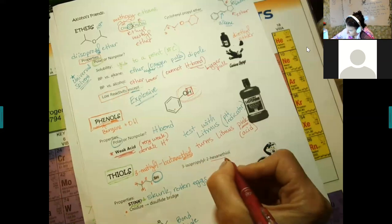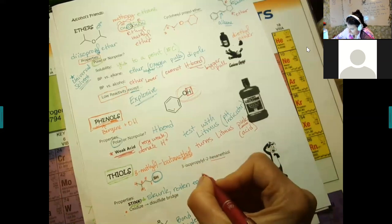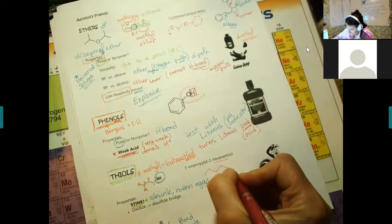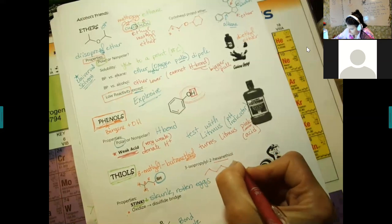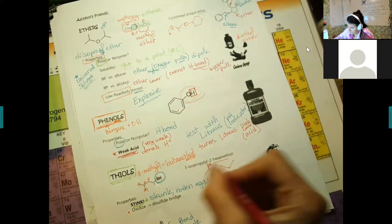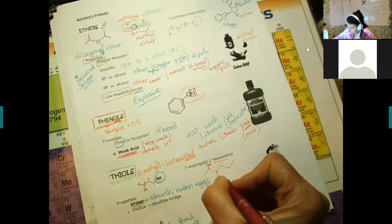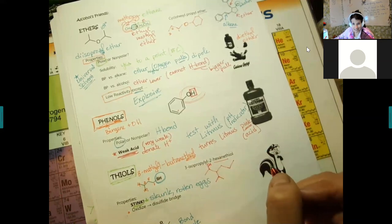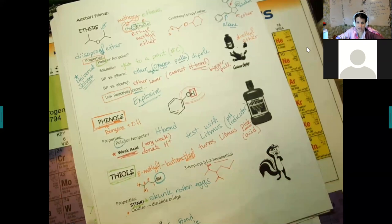For example, hexane with an SH at position two and an isopropyl at position three would be named: 3-isopropyl-2-hexanethiol. Note: thiol means sulfur, a strong smell, and special biochemical reactivity.